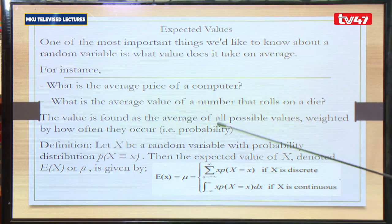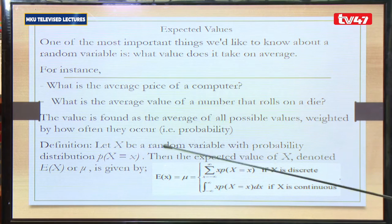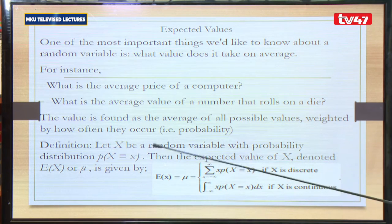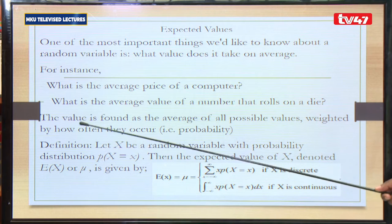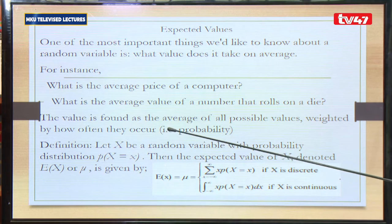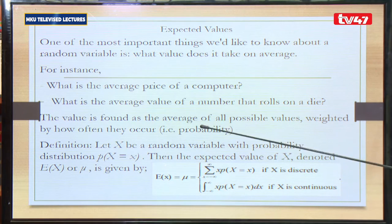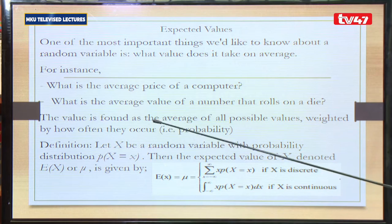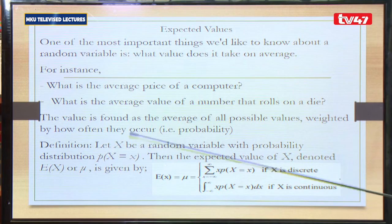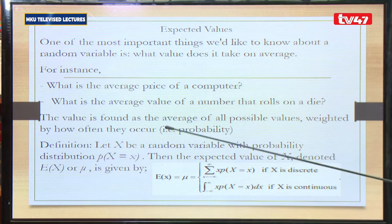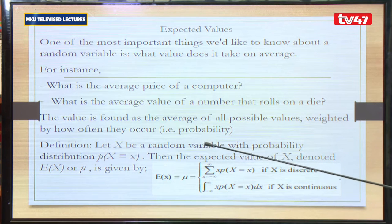the expected value is one of the most important things one would want to evaluate about a random variable because it gives us the point at which the average of the observations are. For instance, you could be interested in knowing the average price of a computer, or the average value of the number of rolls of a die. This value is found as the average of possible values weighted by how often they occur, and these weights are contributed by the probability.